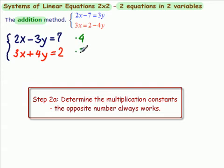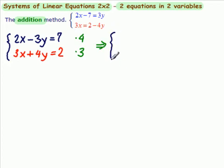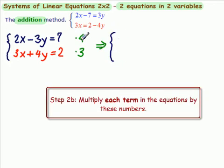So this one gets multiplied by this 4, and this one gets multiplied by the 3. And we have, multiplying each term by 4, 4 times 2 is 8x, 4 times minus 3 is minus 12y, equals 4 times 7 is 28.